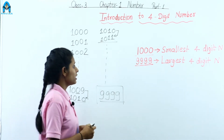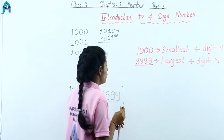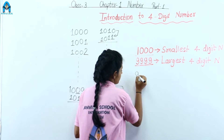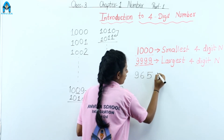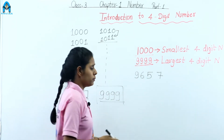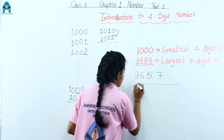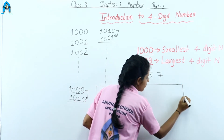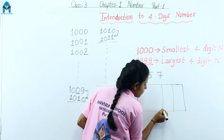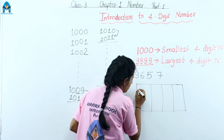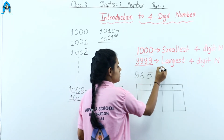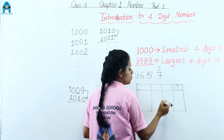Now let's make a place value chart for a number. I have written some 4-digit numbers. Let's make a place chart for this number. We start from here — this digit is on the ones place.